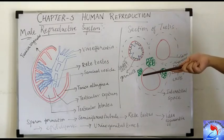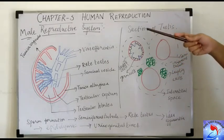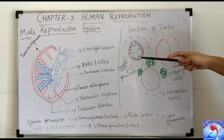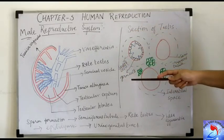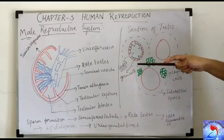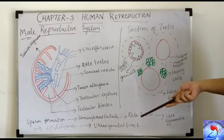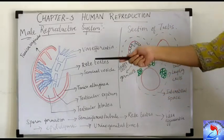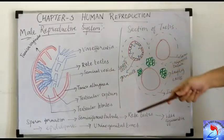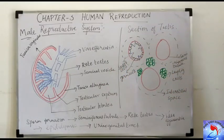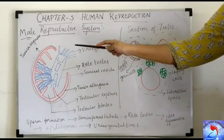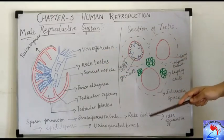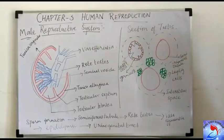There are a maximum of 300 lobules present in the testis, and each lobule consists of three seminiferous tubules, so obviously there will be 900 seminiferous tubules in the whole testis. The seminiferous tubule is the site of production of sperm — the sperm is produced in the seminiferous tubules.